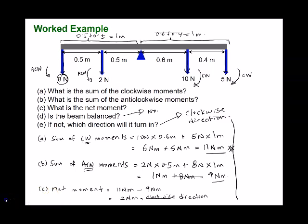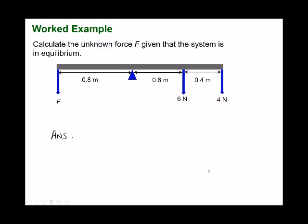Now for the next example, the system is in equilibrium so the beam is balanced. The sum of clockwise moments must equal the sum of anti-clockwise moments. Try this on your own — the answer for F should be 6.5 newton.